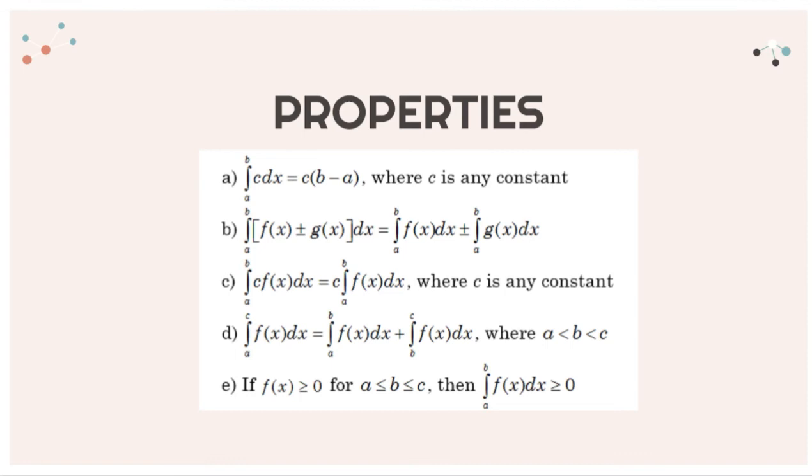The next one is if we have a function multiplied by any constant, we can take out the constant and then just integrate the function. And then the next one is if we have limits from a to c, we can separate the limit: a to b and then b to c, because it is continuous.